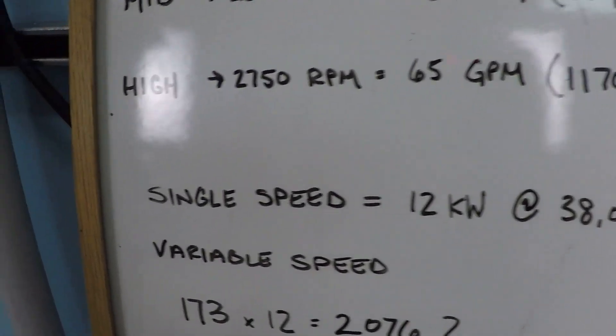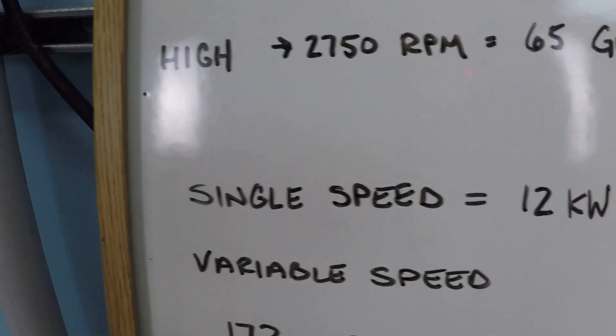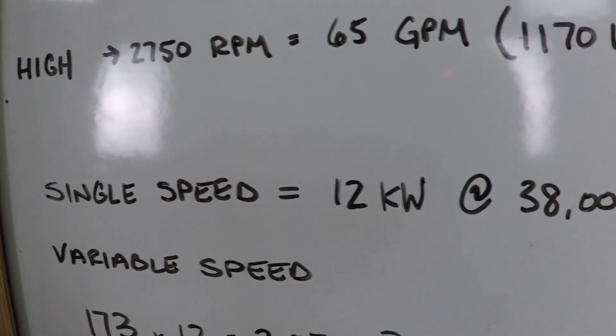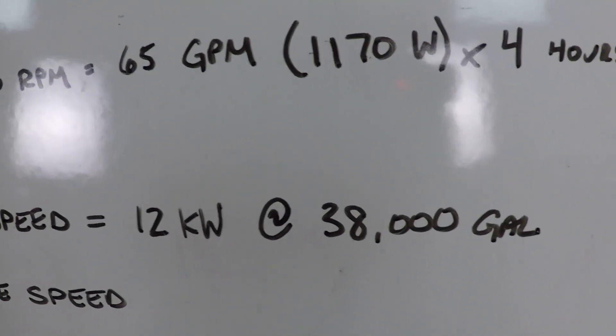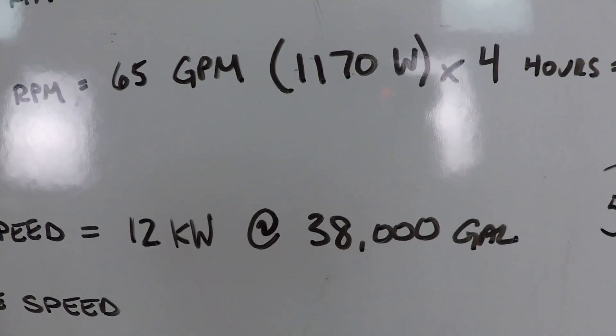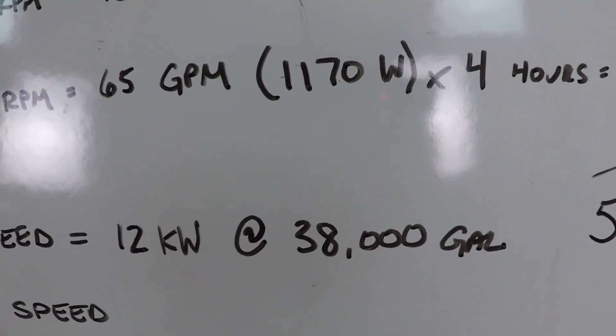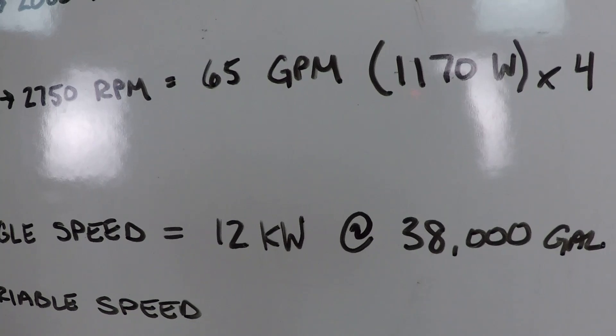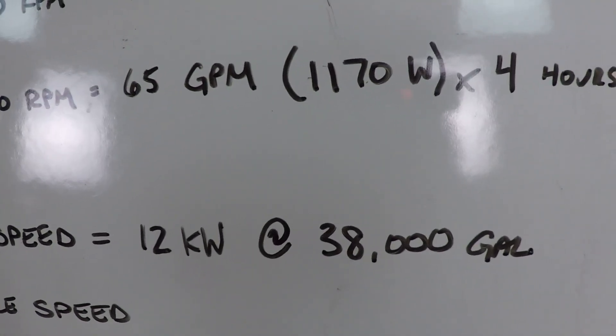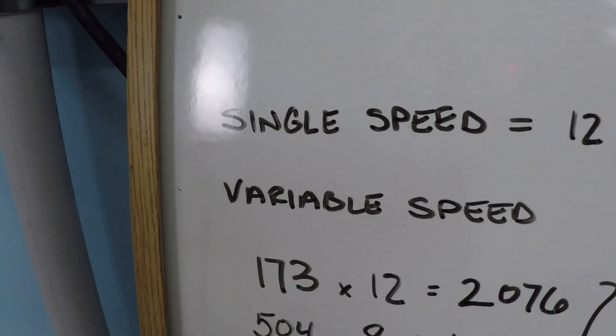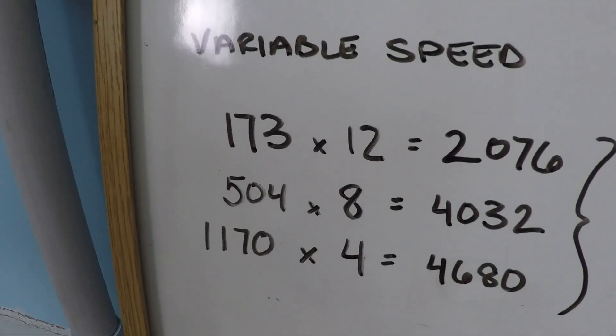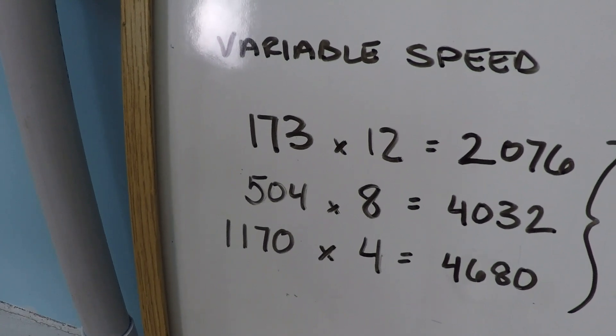Let's look at the power consumption for this. A single speed pump used 12 kilowatts of power to filter 38,000 gallons of water. That's the starting point here. That's I run my pump 8 hours a day, 12 kilowatts per day, and you get 38,000 gallons for it. With this optimized variable speed schedule, this is the power calculation.